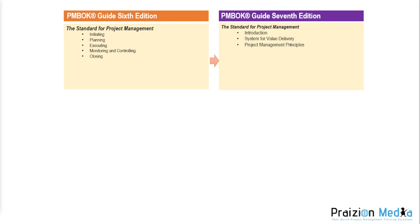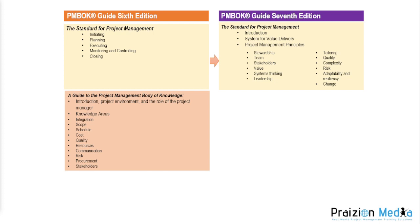In the 6th edition, it was broken down by the five process groups in the standard for project management, which is in the second part of the book from around page 555 in the 6th edition. But in the 7th edition, they lead with introducing you to project management, a system for value delivery — projects, programs, and portfolios — and project management principles, from stewardship all the way down to change. In the PMBOK Guide 6th edition, chapters 4 and beyond continue the narrative of knowledge areas.